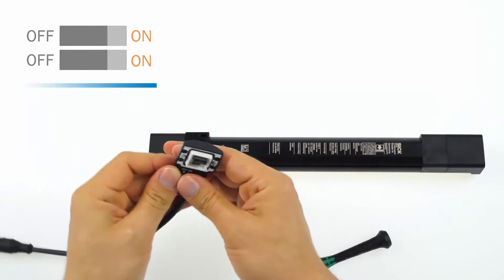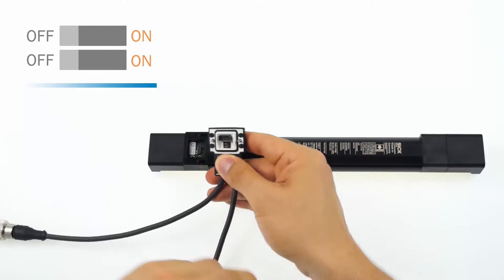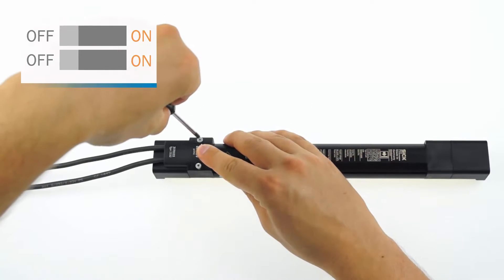In the second step, remove the system plug again and set both of the DIP switches back to their initial position, which is OFF. Reconnect the system plug and then the power supply.